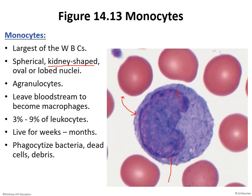The monocyte nucleus is not multi-lobed — it's just one lobe with a kidney-bean shape. Both agranulocytes have a unique ability: they can leave the bloodstream and live for a long time — weeks and months. When the monocyte leaves the bloodstream, it changes its name and becomes a macrophage. Macro means big, phage means eater — they become big eaters. This is the other phagocytic cell, alongside neutrophils.